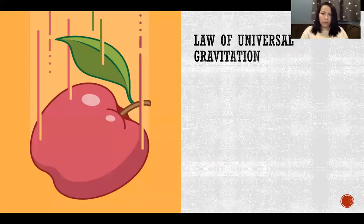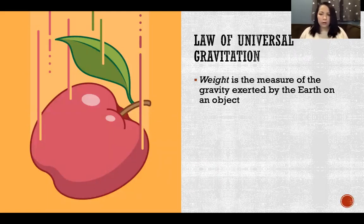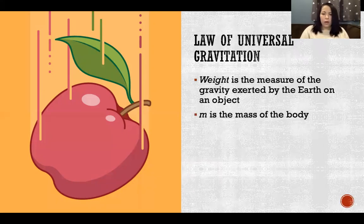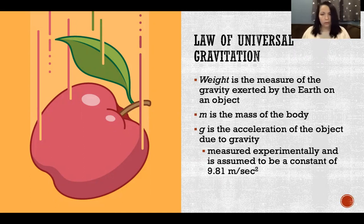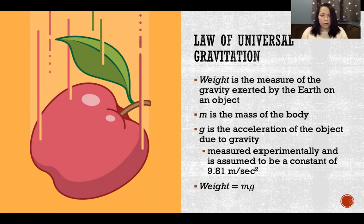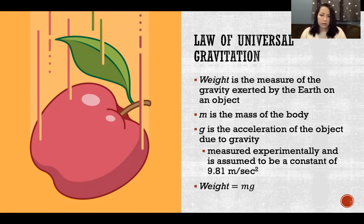The law of universal gravitation: weight is the measure of the gravity exerted by the earth on an object. Mass (m) times the gravitational constant (g = 9.81 m/s²) gives us weight. Although if we went to the moon or Mars the mass would remain the same, the gravitational constant would differ because the amount of gravity exerted by that planet changes. On earth the gravitational constant is always the same, so weight equals mass times 9.81.